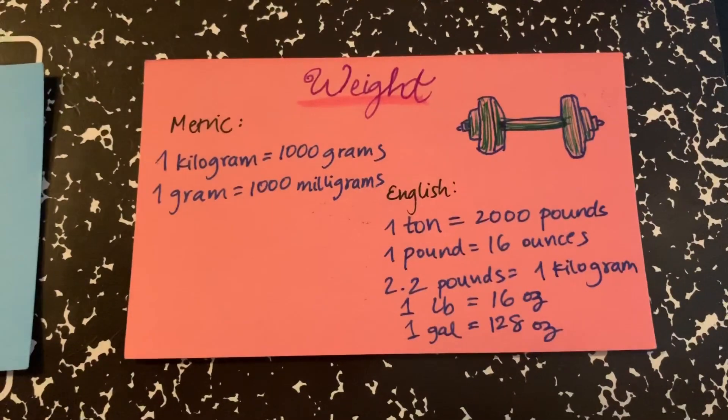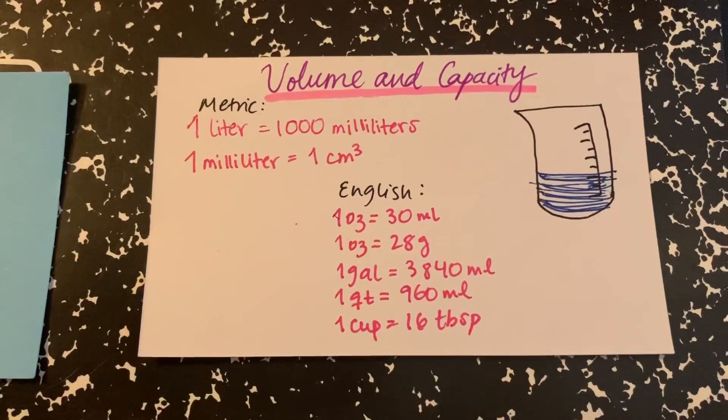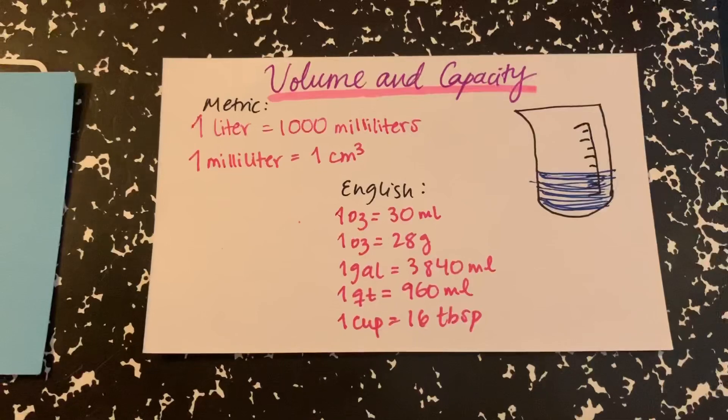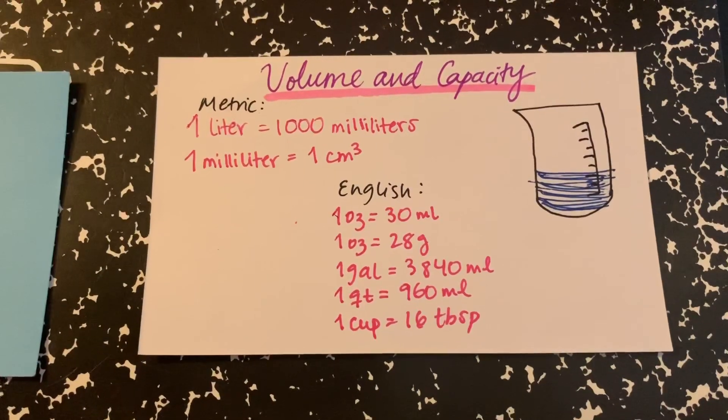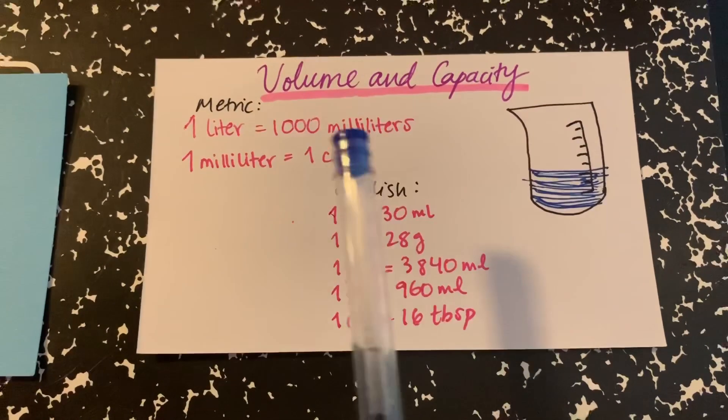Again, all of them are important and I've seen it many times. Now we move on to volume and capacity. From the metric system, we have that 1 liter is equal to 1,000 milliliters. 1 milliliter is equal to 1 centimeter to the cube.